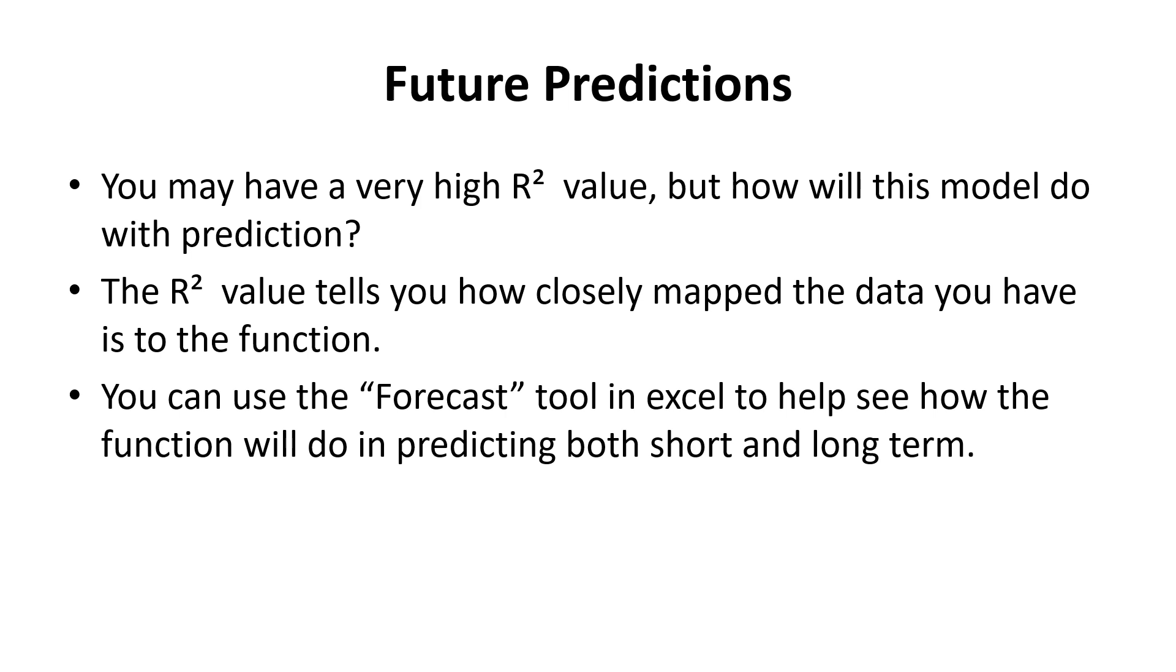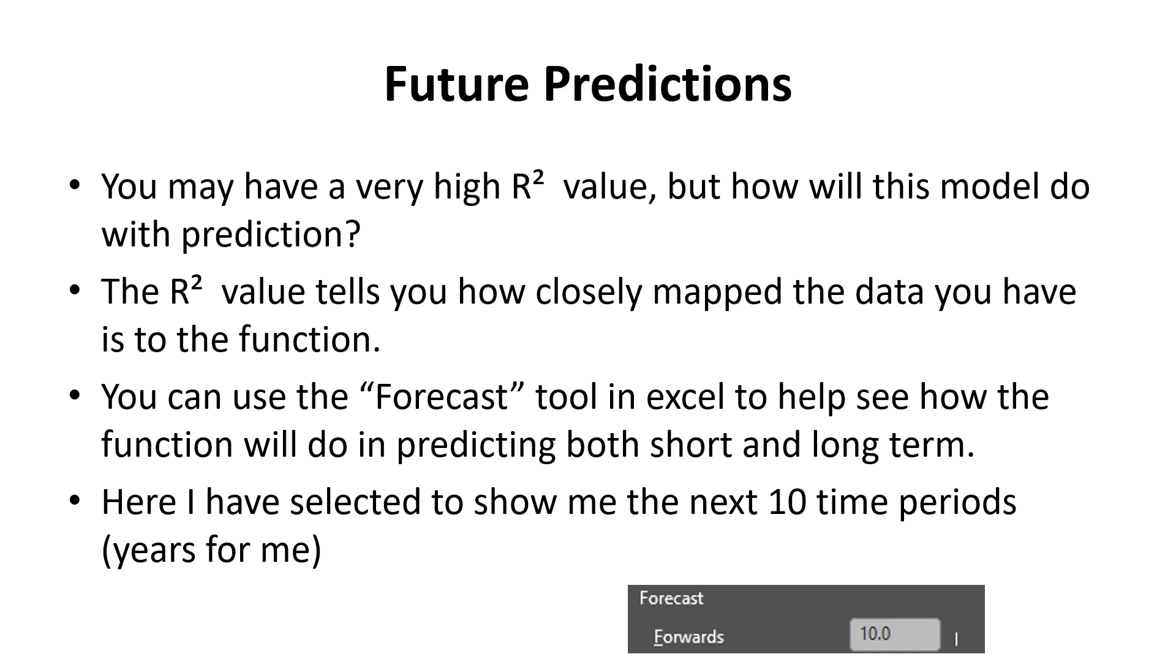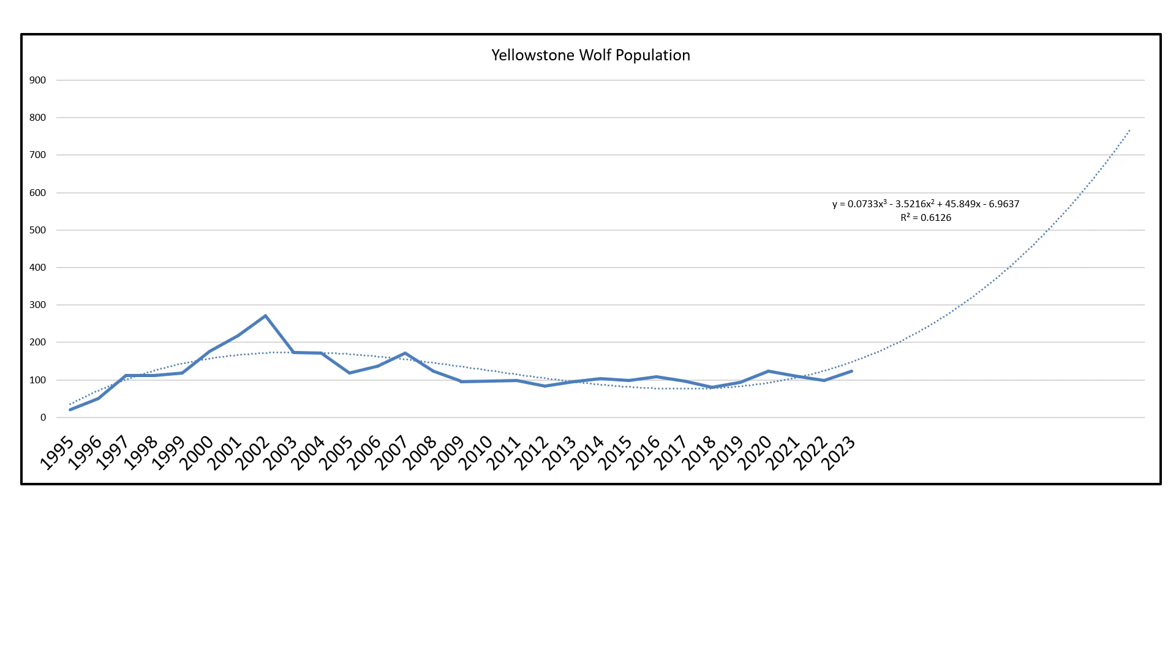I've selected show me the next 10 time periods. How I do that is using this forecast going forward 10, which gives me 10 of my time periods. I'm using my positive cubic as the closest model I have. This is what it looks like for the next 10 years. Now this is very unrealistic.